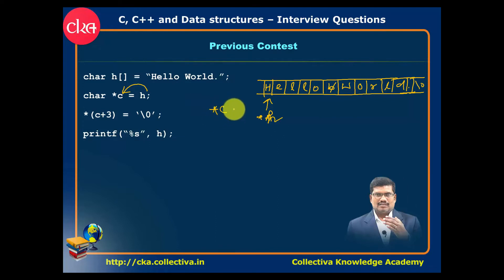One variable create. What is happening? Point out. C plus 3. C, one pointer. Point out. C plus 3. What happened. C plus 1. C plus 2. C plus 3. This point out C plus 3.